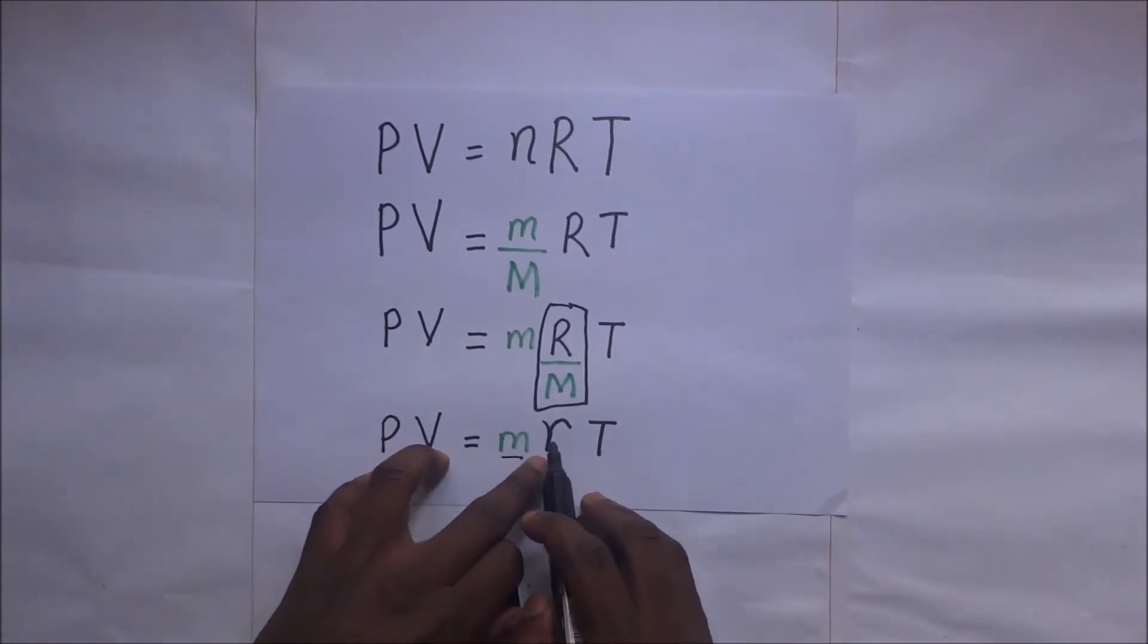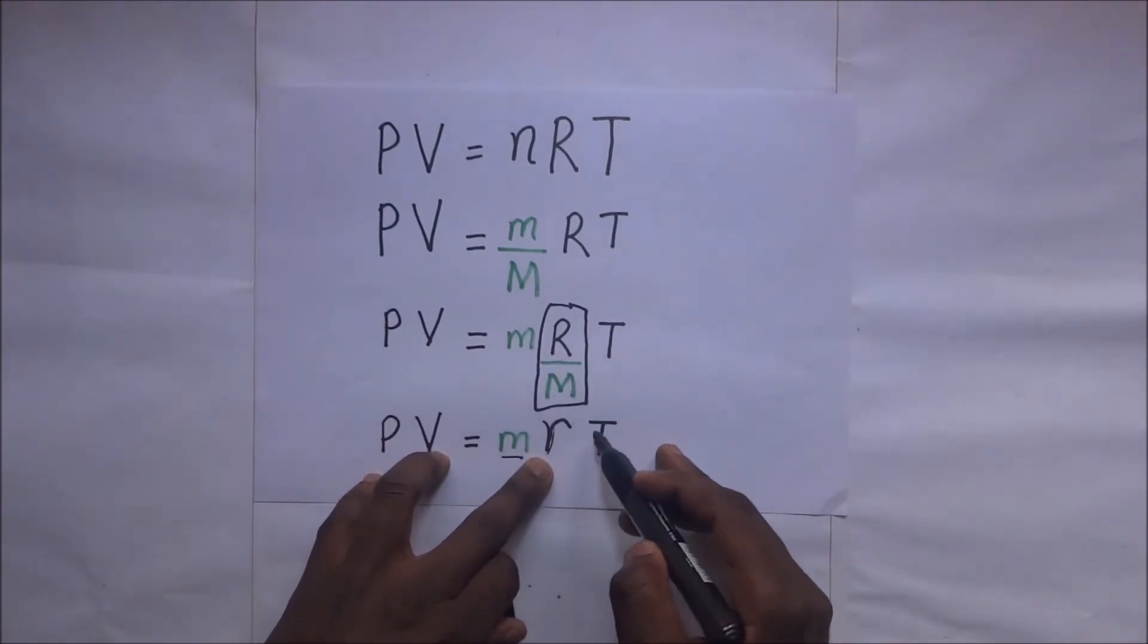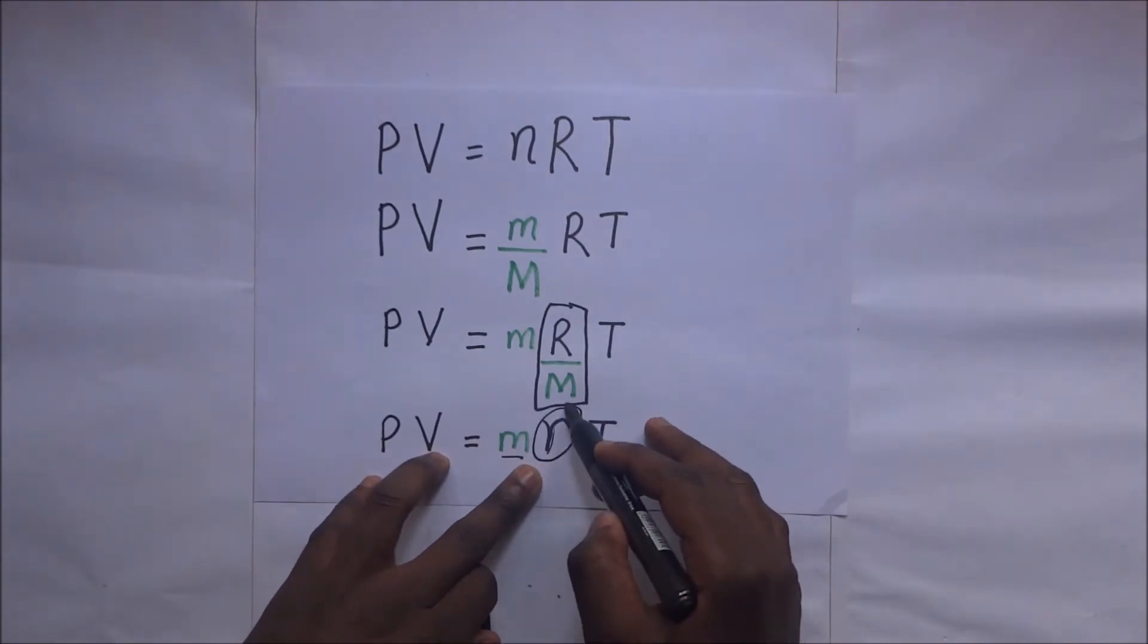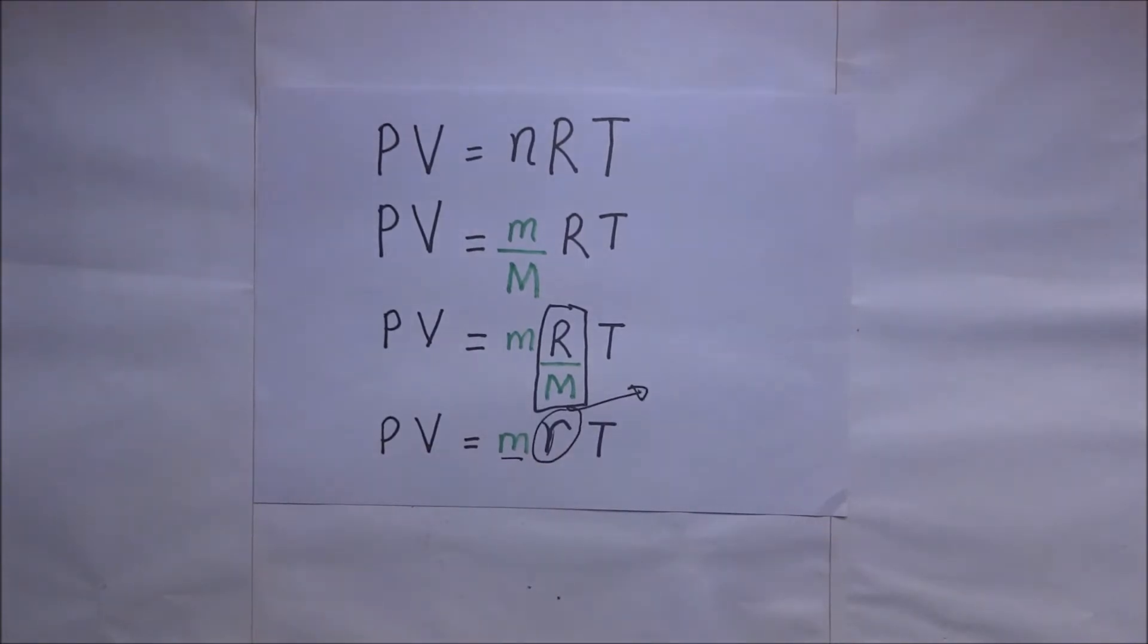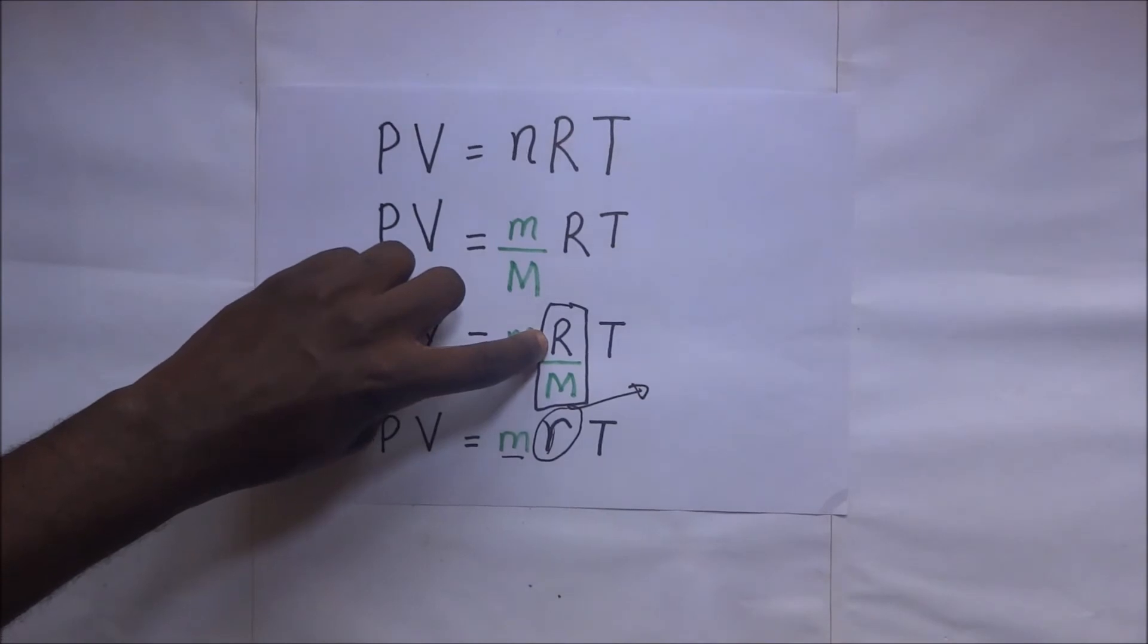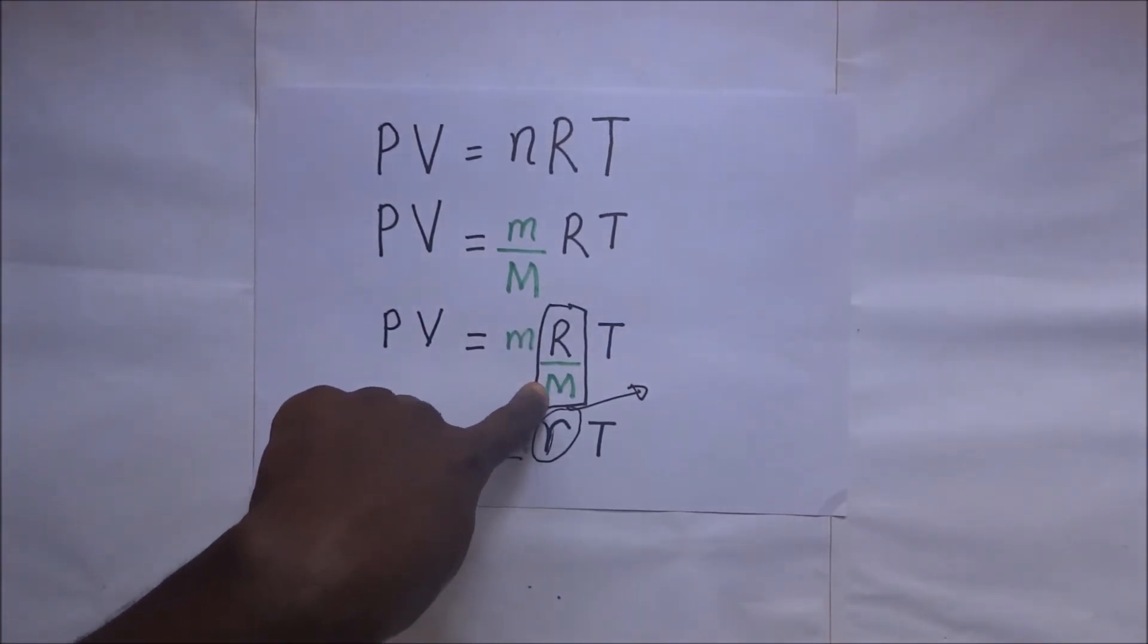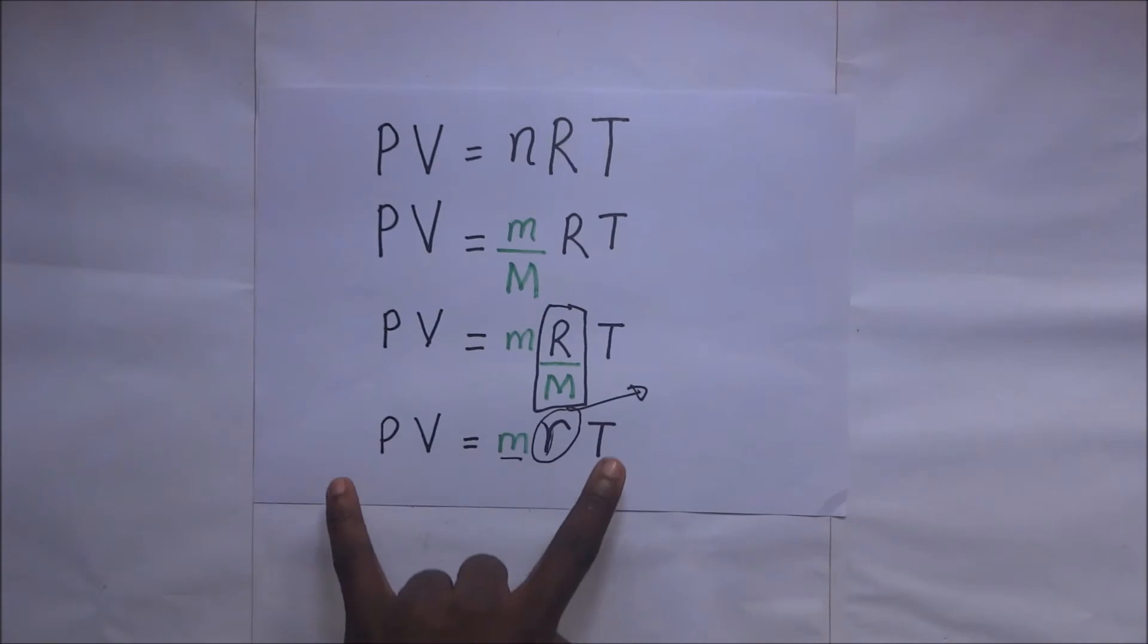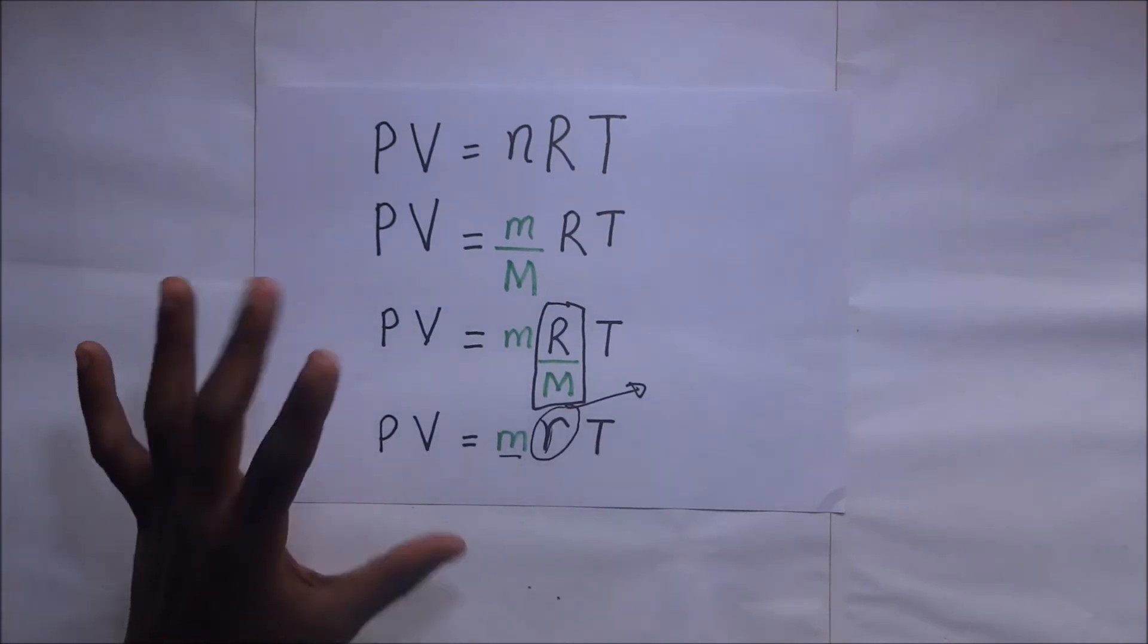...equals m times r times T. Now this r is what we call the molar gas constant per unit molecular mass. This is the expression we're deriving.